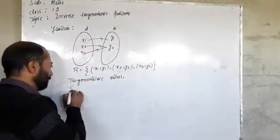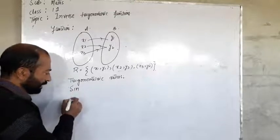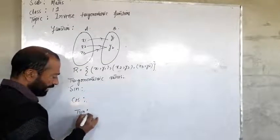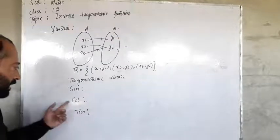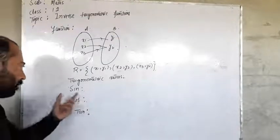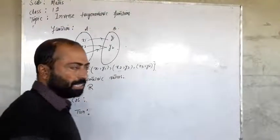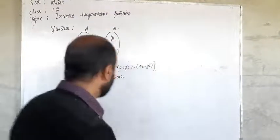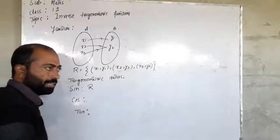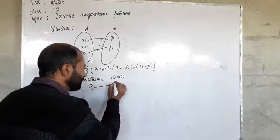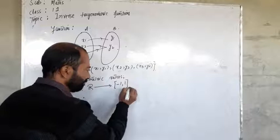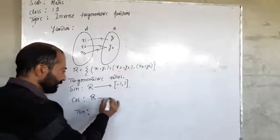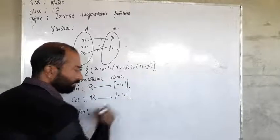Let us discuss the domain and range of the trigonometric functions. These are: sine, cosine, tangent, and their reciprocals — cosec, sec, and cot. The domain of the sine function is the set of all reals, since sine is defined for all real values of the angle. The range of sine is the closed interval [−1, 1]. Similarly, the domain of cosine is the set of all reals and the range is [−1, 1].